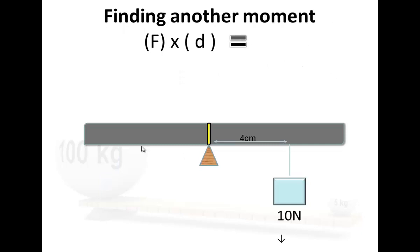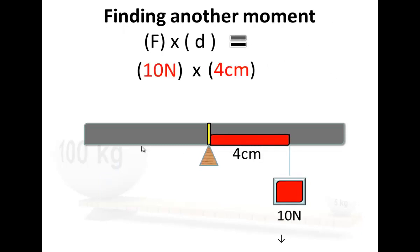Let's do another one. You've got 10 this time, multiplied by the 4, that's going to be 40 newton centimetres.